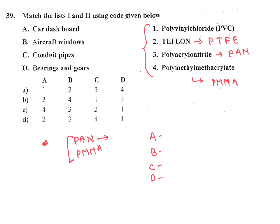So the matching is: A) car dashboard — 3 (PAN), B) aircraft windows — 4 (PMMA), C) conduit pipes — 1 (PVC), D) bearings and gears — 2 (Teflon). Answer is B: 3, 4, 1, 2. If you know only one thing — conduit pipes are PVC pipes — C maps to 1, and you can eliminate other options from there.